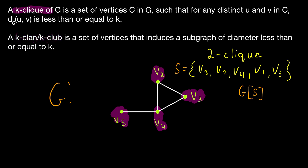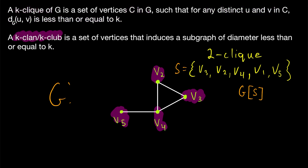A K-clique requires that any two vertices in the clique have a sufficiently small distance between them, but that distance can be achieved by a path that goes outside of the clique. K-clans or K-clubs do not allow that. They're the same as K-cliques except their distance restriction applies to the subgraph induced by the vertices in the clan or club, so that the distance between any two vertices must be less than or equal to K even when we restrict all paths to remain inside the clan or club.